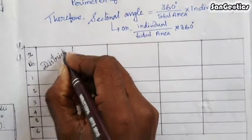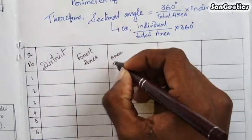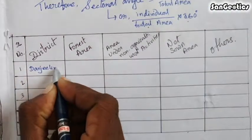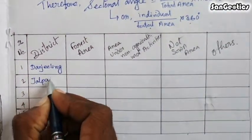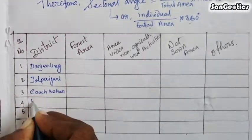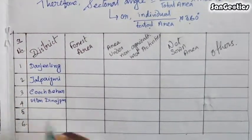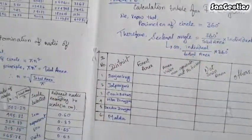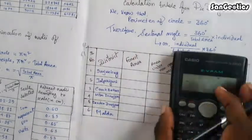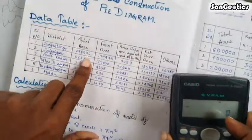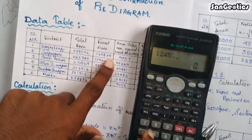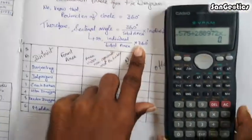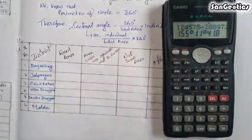The table captions include district, forest area, area under non-agricultural activities, net zone area, and other areas. Copy the district names from your data table: Darjeeling, Jalpaiguri, Coochbehar, Uttar Dinajpur, Dakshin Dinajpur, and Malda. Then calculate the sectoral angle of forest area for Darjeeling district: 124577 / 288972 × 360° = 155° 11'.